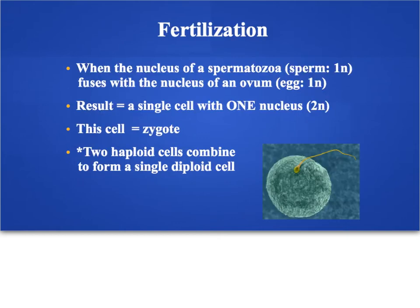In fertilization, I take the spermatozoa — which is just a fancy name for sperm — that is 1N, and it fertilizes the ovum, which is a fancy word for egg, which is also haploid. So two nuclei come together to create one diploid cell, which we call a zygote. That zygote will then undergo mitosis to create an entire individual.